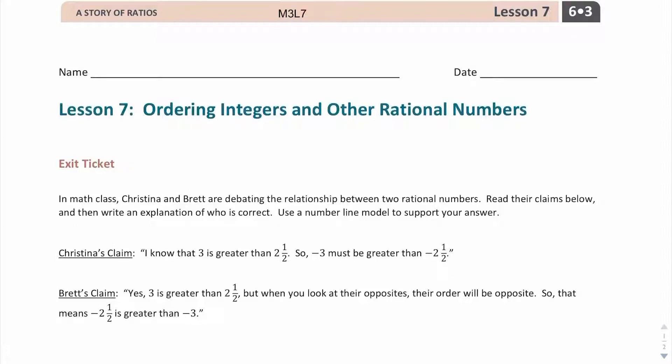In math class, Christina and Brett are debating the relationship between two rational numbers. Read their claims below and then write an explanation of who is correct. Use a number line model to support your answer.